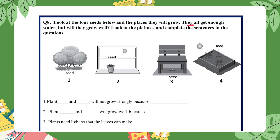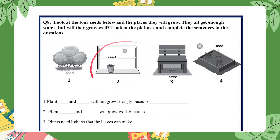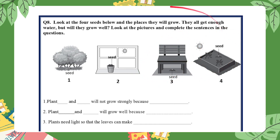Question eight: look at the four seeds below and the places they will grow. They all get enough water, but will they grow well? Baby plants grow from seeds. Plants which get plenty of sunlight grow well; plants in shady places grow more slowly; and plants in semi-dark or dark places look unhealthy. Seed one is under a tree, seed two is near the window, seed three is under a chair, and seed four is on a plant box.